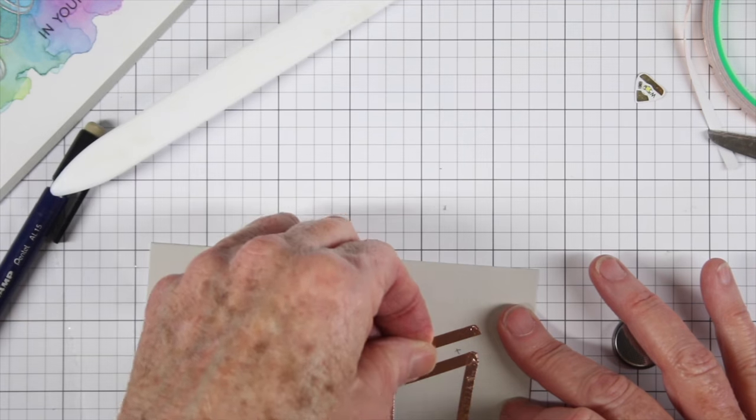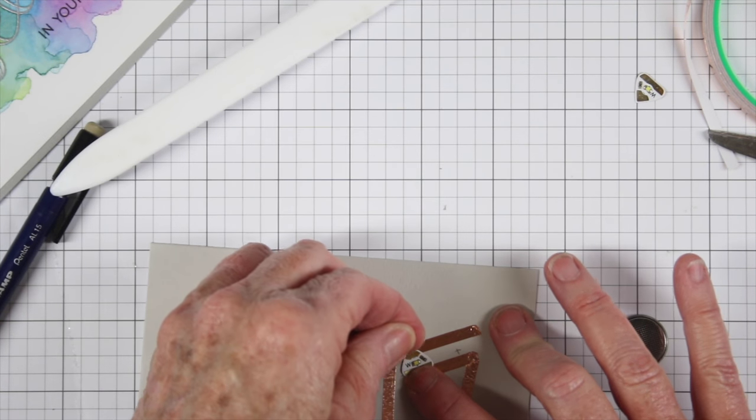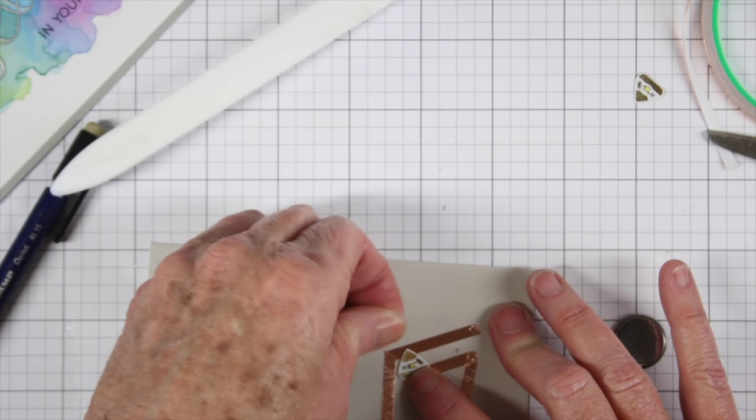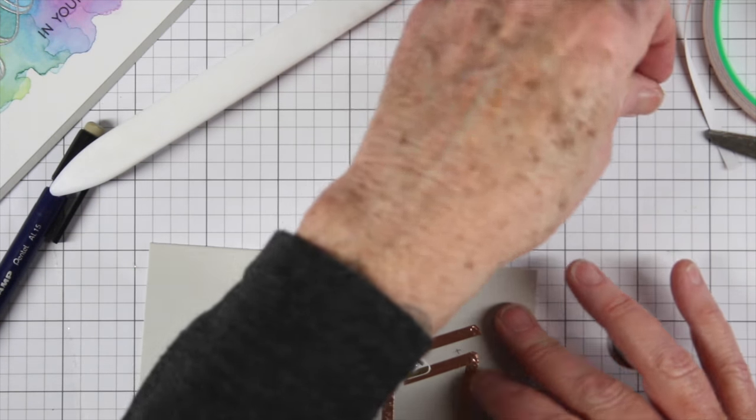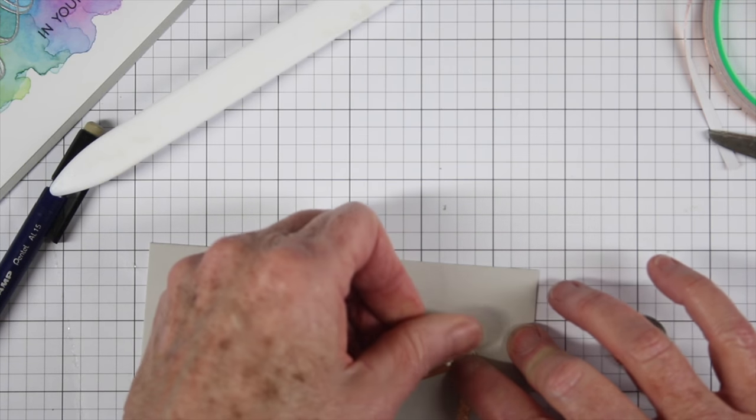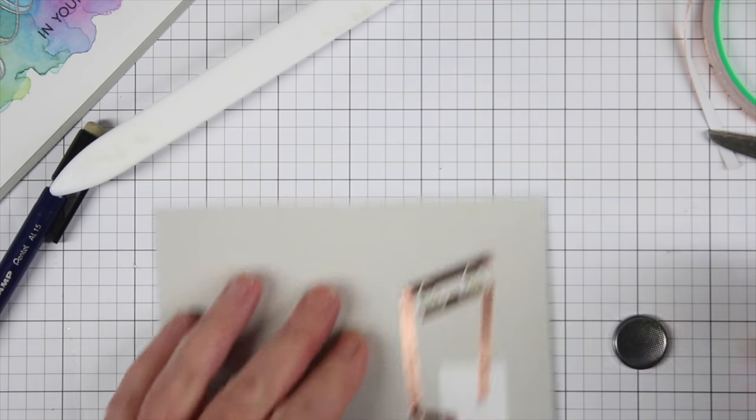Next I'll be grabbing my Chibitronic lights and these are little stickers. The top of them in the pointy area is the negative and then the bottom is the positive. So I'm going to make sure that I put both of those down to where those little terminals are touching.